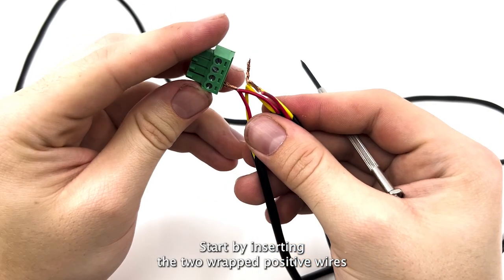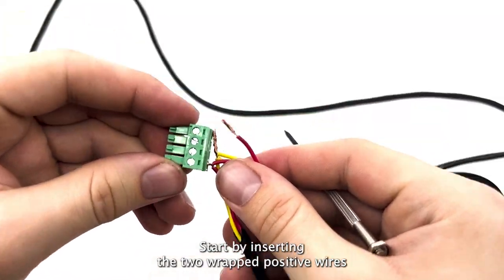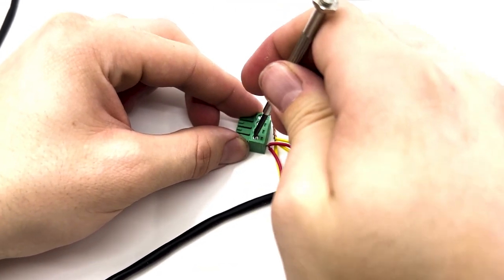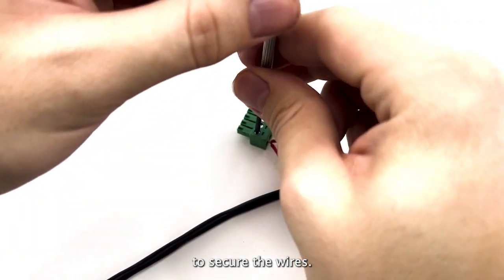Start by inserting the two wrapped positive wires into terminal 12V. Then tighten the terminals to secure the wires.